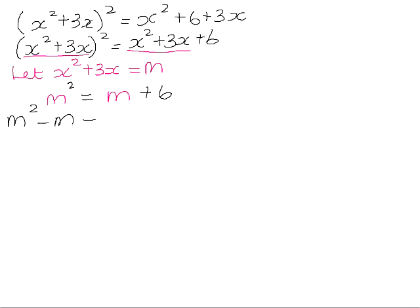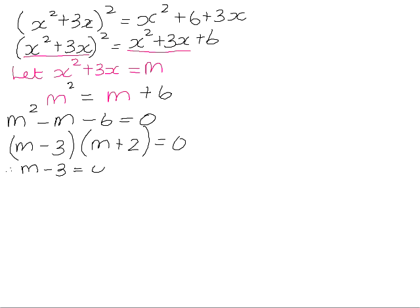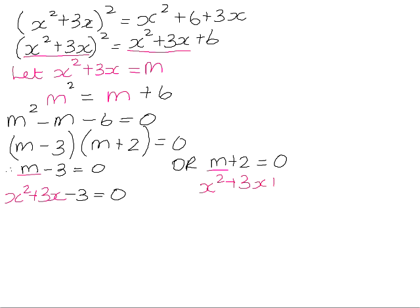That's a much more manageable equation, so we go about getting it into standard form. m squared minus m minus 6 factorizes as a trinomial into (m minus 3)(m plus 2). Therefore m minus 3 equals 0, or m plus 2 equals 0. But we were not solving for m — we were solving for x. So we go back and replace the m's with x squared plus 3x: giving us x squared plus 3x minus 3 equals 0, and x squared plus 3x plus 2 equals 0.